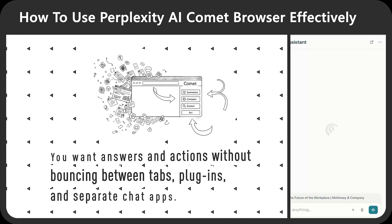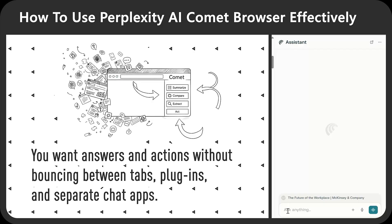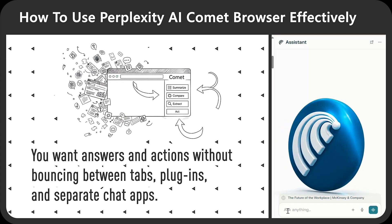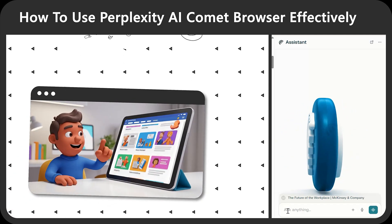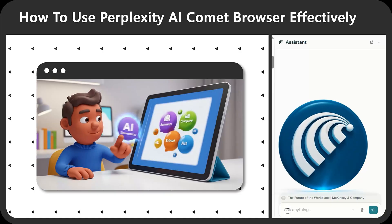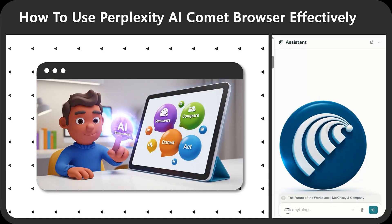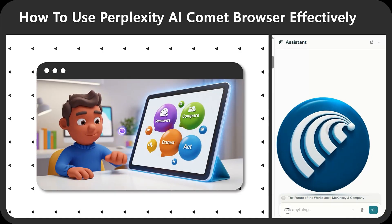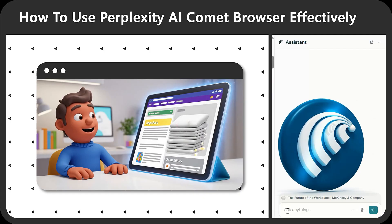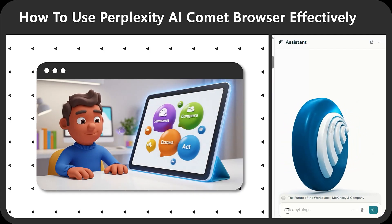Here's the biggest benefit. If you want answers and actions without bouncing between tabs, plugins, and separate chat apps, Comet gives you exactly what you need. You start with AI-driven search results, and then use the assistant available on any page where you can summarize, compare, extract, and even act on the page that you're viewing.